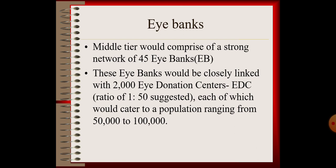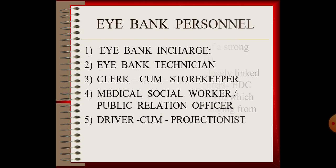The middle tier comprises a strong network of 45 eye banks, closely linked with 2000 eye donation centers at a ratio of 1:50, each catering to a population of 50,000 to 1 lakh people. Eye bank personnel include: eye bank in-charge, eye bank technician, clerk-cum-storekeeper, medical social worker, public relations officer, and driver-cum-projectionist.